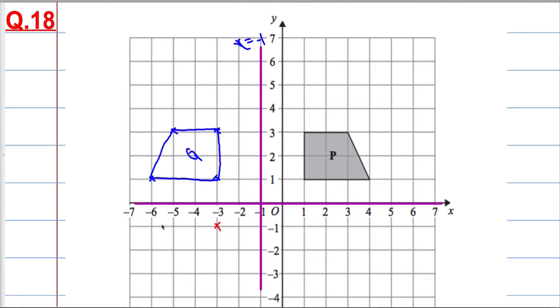So there, there, this is 1, 2, 3, so 1, 2, 3, and there, like so. And that's shape R.